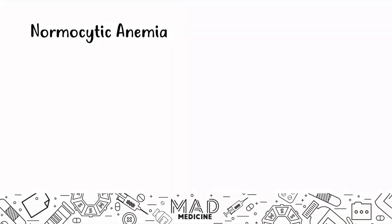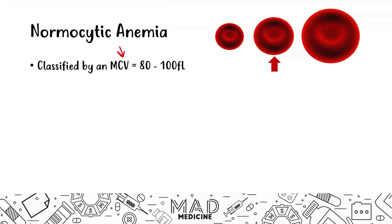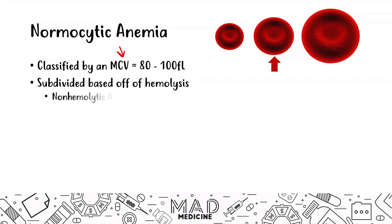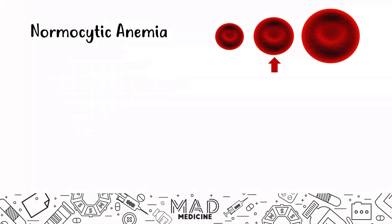Let's talk about normocytic anemias. These are classified based on an MCV that is normal — 80 to 100. That is the hallmark definition of a normocytic anemia. Normocytic anemias are subdivided based on hemolysis: you can have non-hemolytic and hemolytic anemias, which can be further subdivided into intrinsic and extrinsic hemolytic anemias.